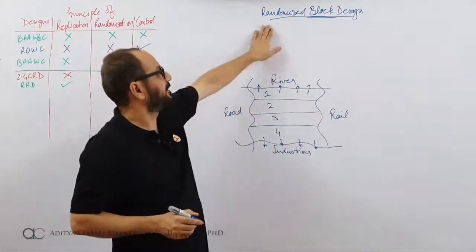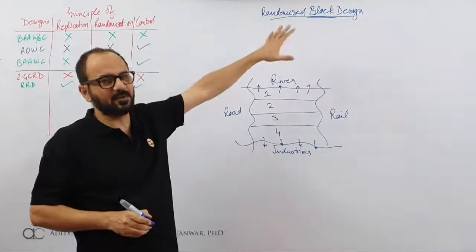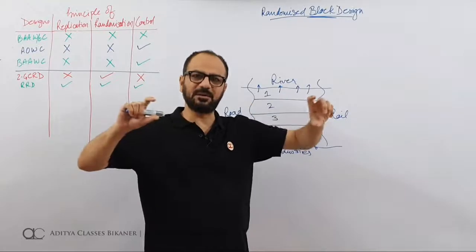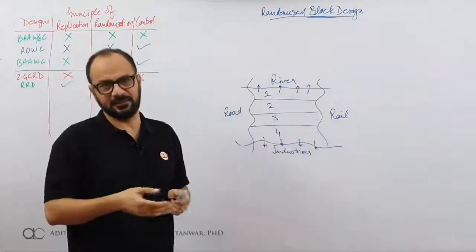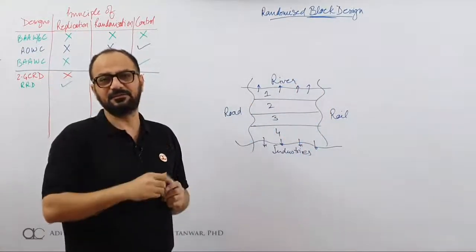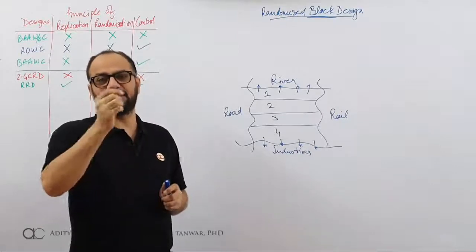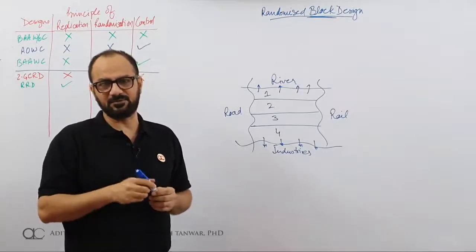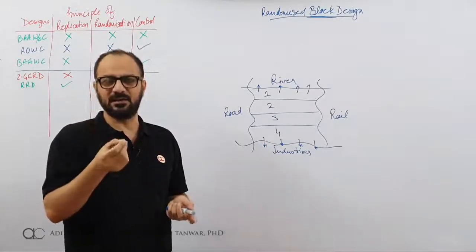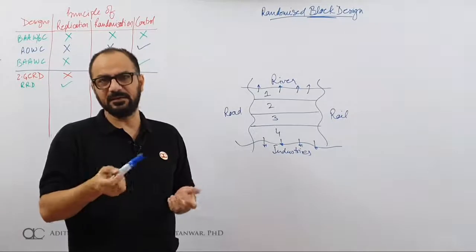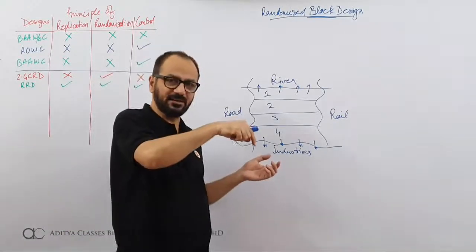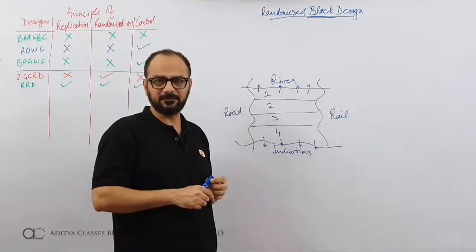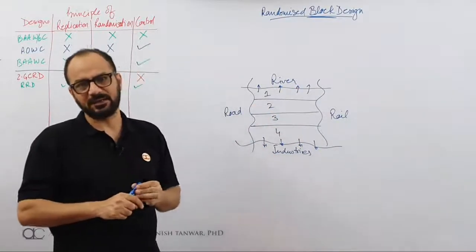This is the idea behind randomized block design. The block concept is to divide into groups where the extraneous factor is homogeneous. What we are checking is: how is the fertilizer or seed performing? We want to study seed yield, but the land structures themselves are different — some land is more fertile, some less. So the land's effect is also coming in.